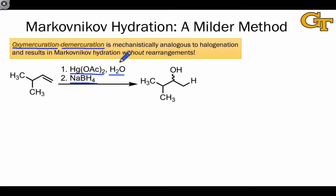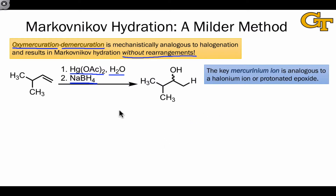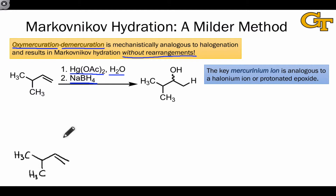Oxymercuration involves Markovnikov-type hydration without rearrangements because it doesn't involve a discrete carbocation intermediate. Instead, it involves the formation of a key intermediate called a mercurinium ion. This intermediate is analogous to the halonium ion, or protonated epoxide, both of which we've seen before, and it's formed through a very similar mechanism.